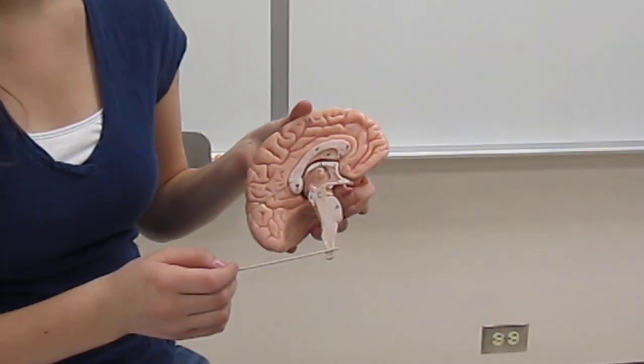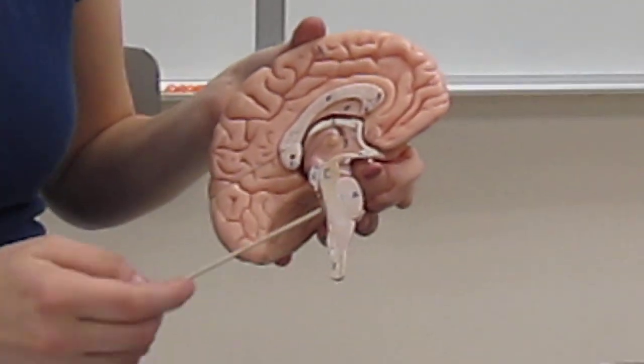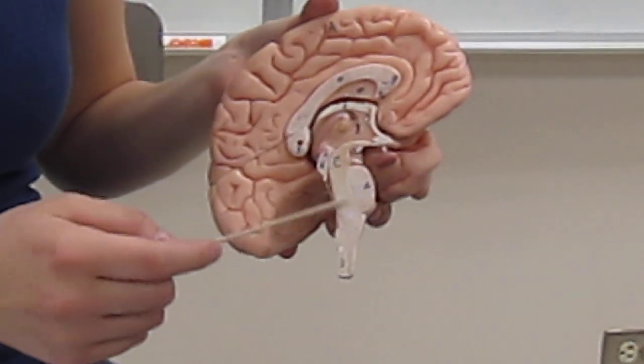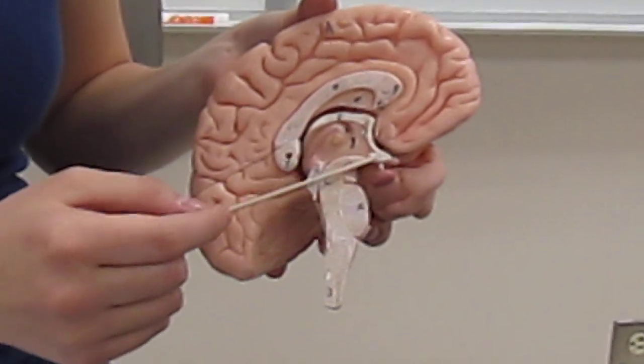This whole section is the brain stem, and it is composed of the medulla oblongata, the pons, and the midbrain.